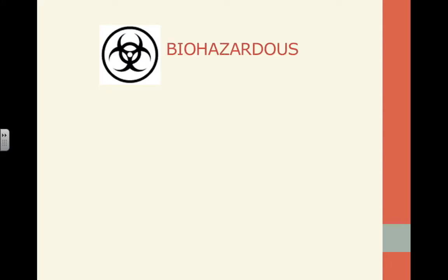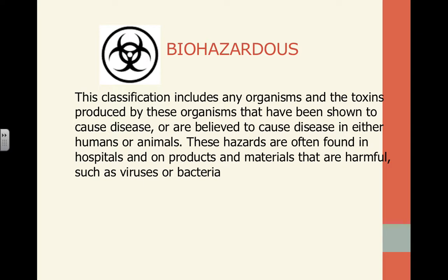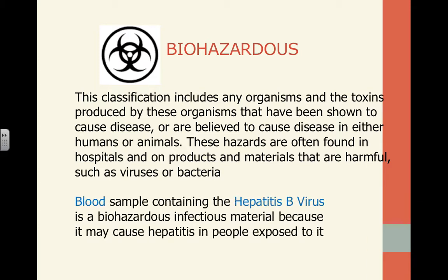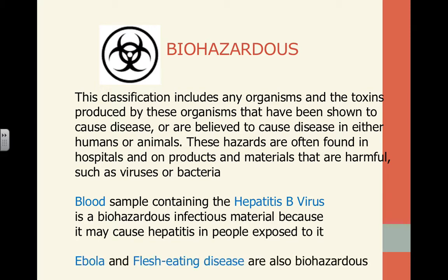The first WHMIS symbol is biohazardous. This means there are toxins that could affect the body and cause disease. We sometimes see this at the hospital. For example, a blood sample containing the hepatitis B virus is biohazardous infectious material. If we're exposed to that, it could affect us, so safe handling is required. You'll see biohazardous stickers on bins and with needles at the hospital. An example of a biohazardous material is the flesh-eating disease.